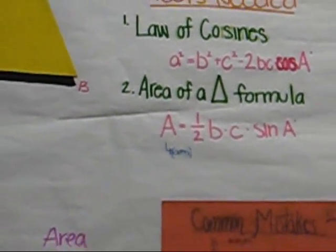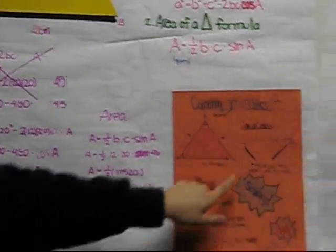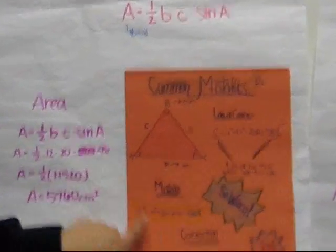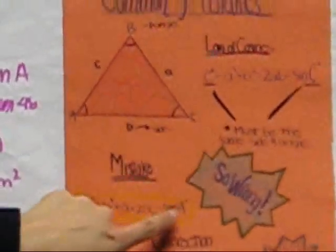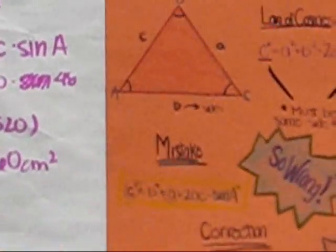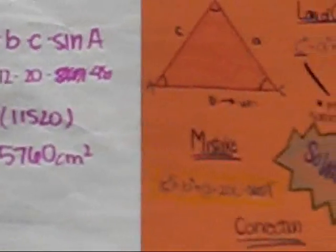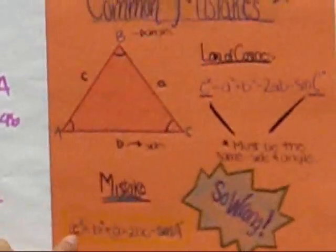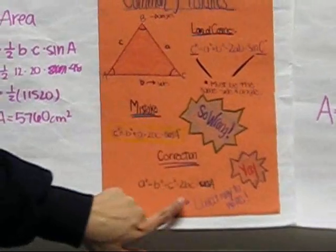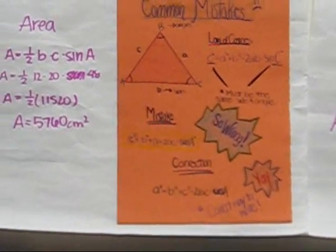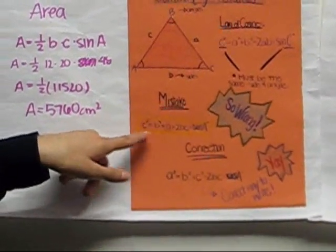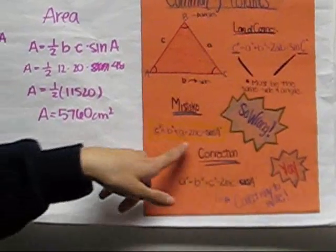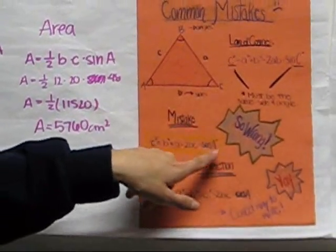And some common mistakes from that are usually, they don't match up the last two. And so instead of writing a squared equals b squared plus c squared minus 2bc times cosine of a, they write c squared plus b plus a minus 2bc minus sine of a, which is wrong.